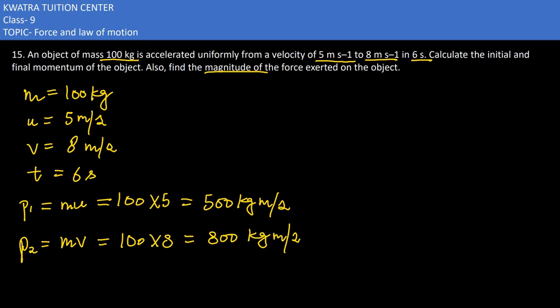In the next one they are saying find the magnitude of the force exerted on the object. And we know it is nothing but m times v minus u divided by t. What is m into v? It is the final momentum which is 800.